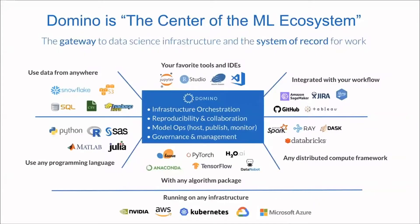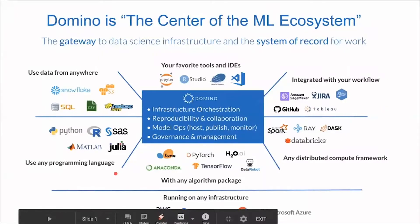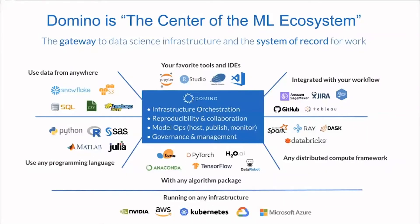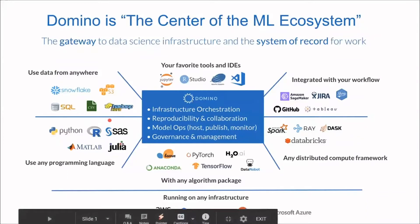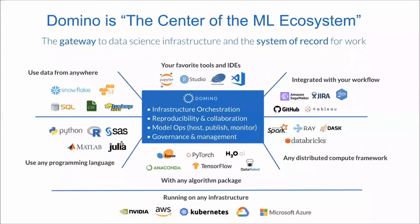Let's start with a quick introduction to the Domino Data Science platform. It is an end-to-end platform for code-first data scientists. It provides infrastructure orchestration, reproducibility, model operationalization, governance and management. The platform is completely open — we don't impose any specific tools or languages on the data scientists. We support virtually any programming language: Python, R, MATLAB, Julia. We're not restricted to open source; we also support SAS, and anything that can be containerized can run in Domino. We can pull data from anywhere — relational databases, flat files, Hadoop — as long as there is a JDBC driver or a Python or R library that supports connecting to that data source.